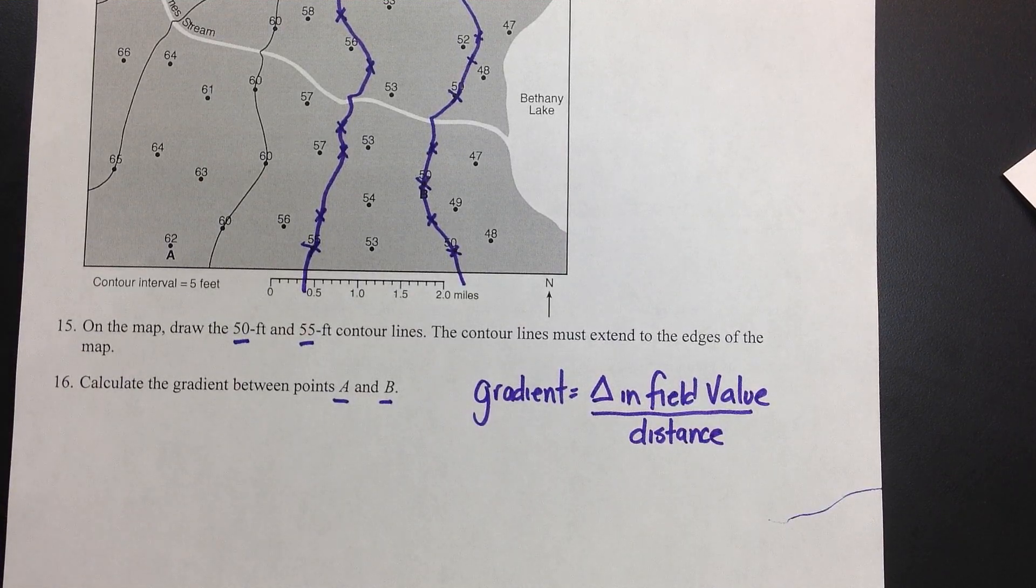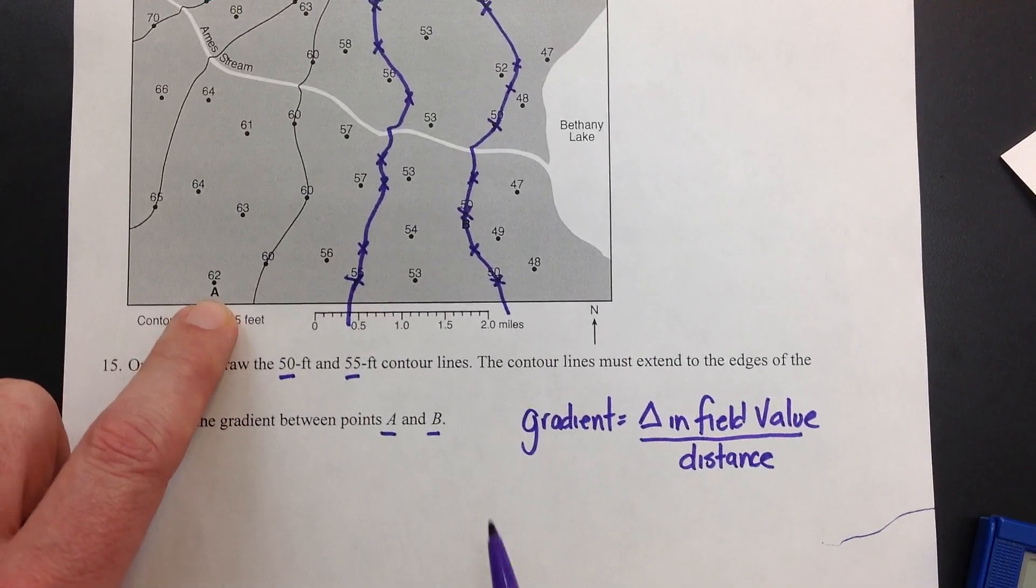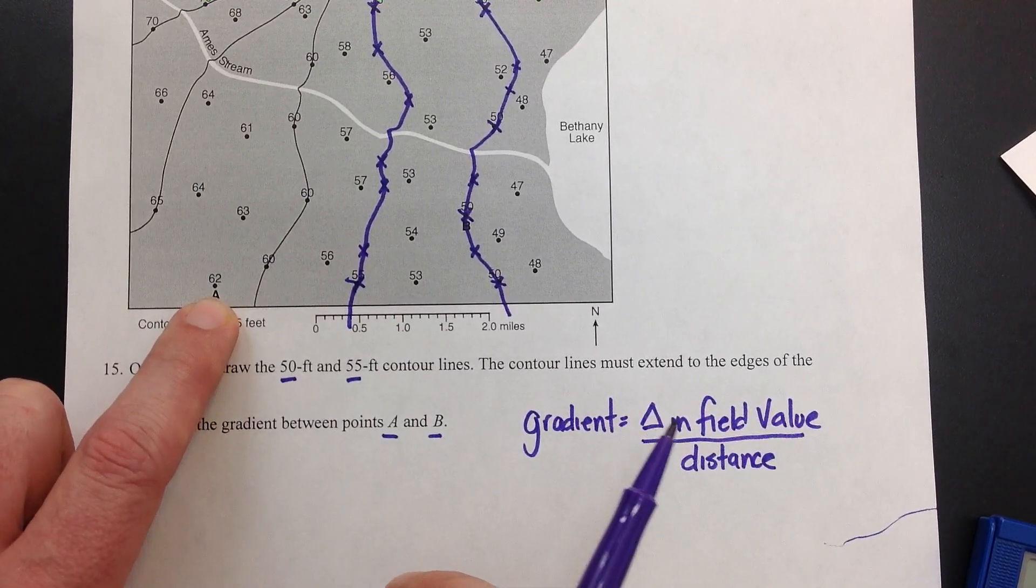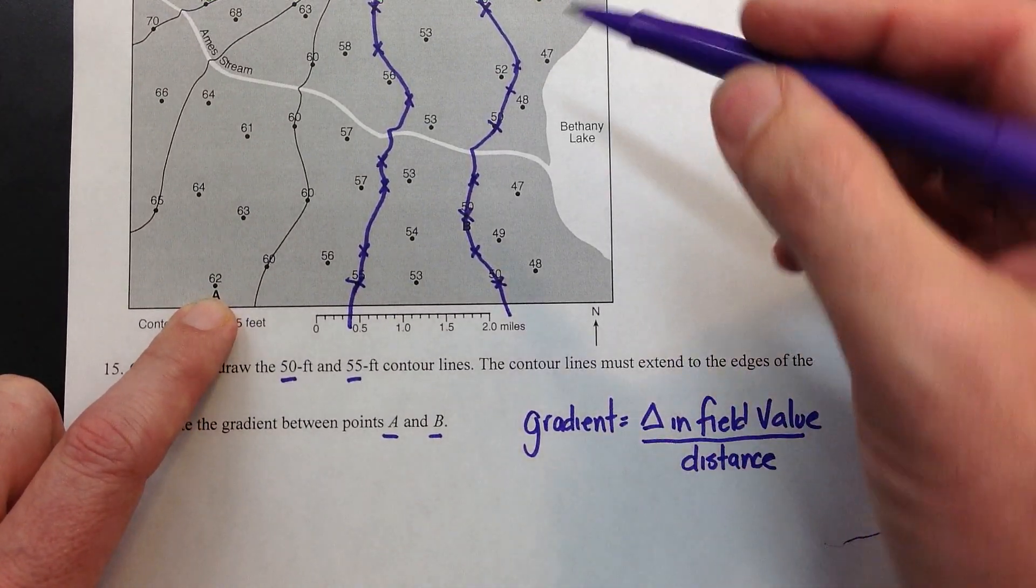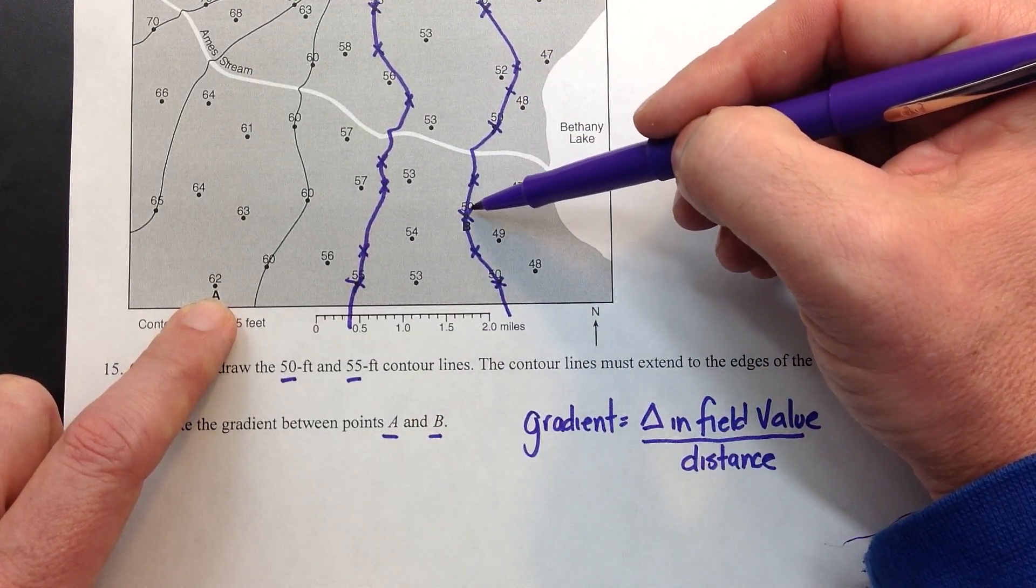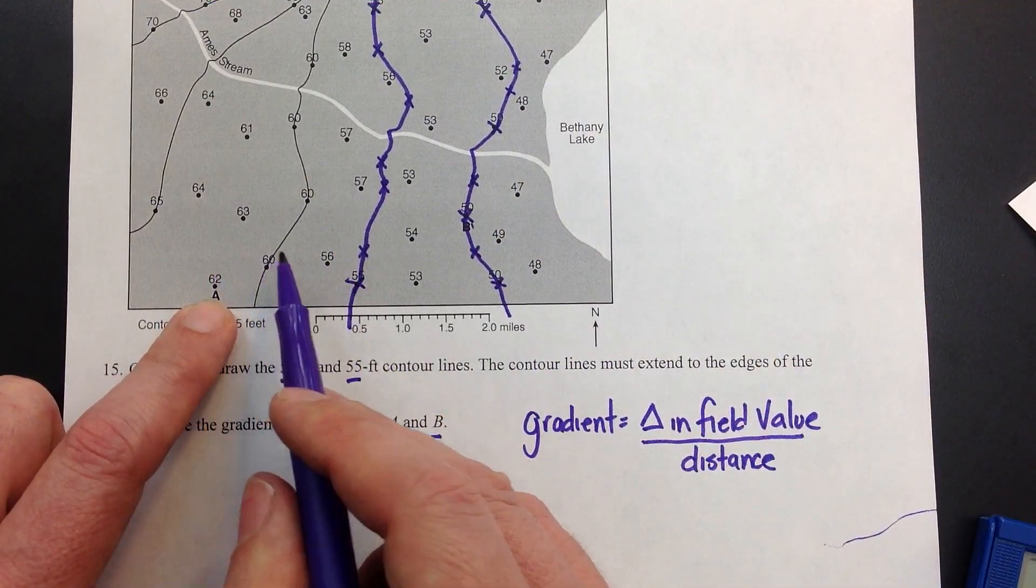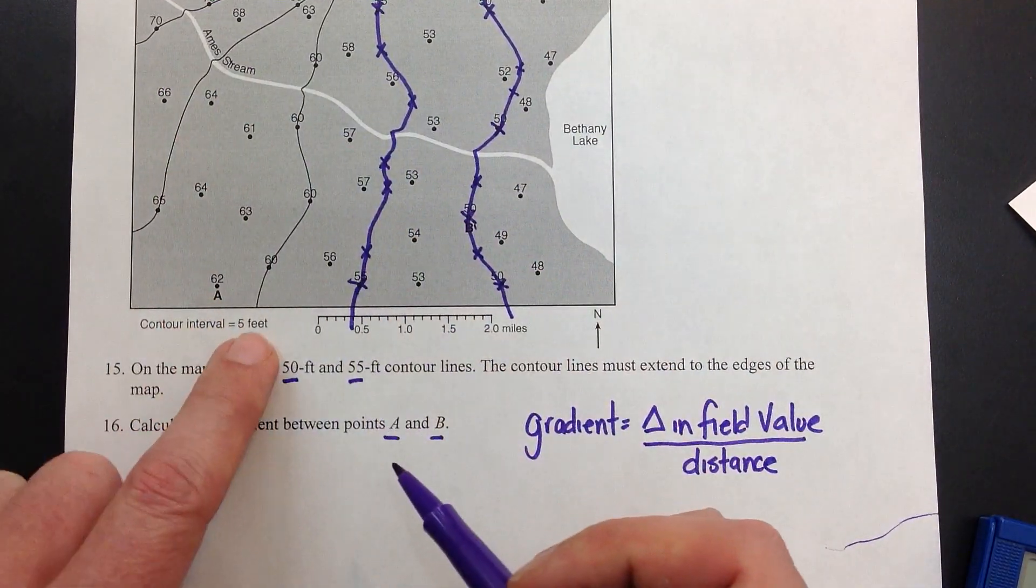Next up, we've got to get the field value. So we're going to do A and B. So A on my map has a value of 62. And B right here looks like it has a value of 50. My line went right over top of B. So all we do here, the lines here and the elevations on here are in feet.